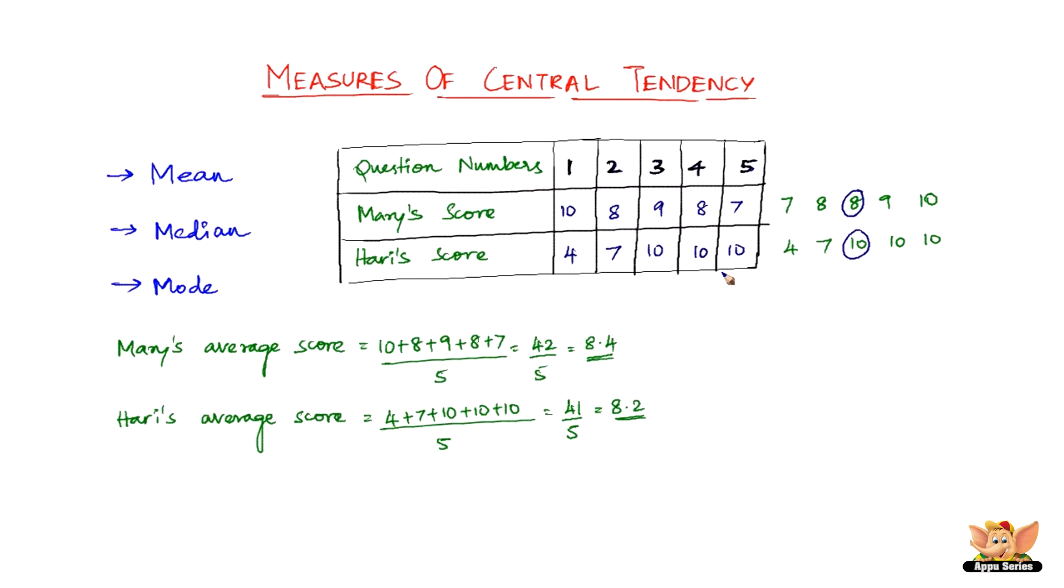Mary was still not convinced. To convince Mary, Hari tried out another strategy. He said he had scored 10 marks more often, three times as compared to Mary, who scored 10 marks only once, so his performance was better. To settle the dispute between Hari and Mary, let us see three measures they adopted to make their point.